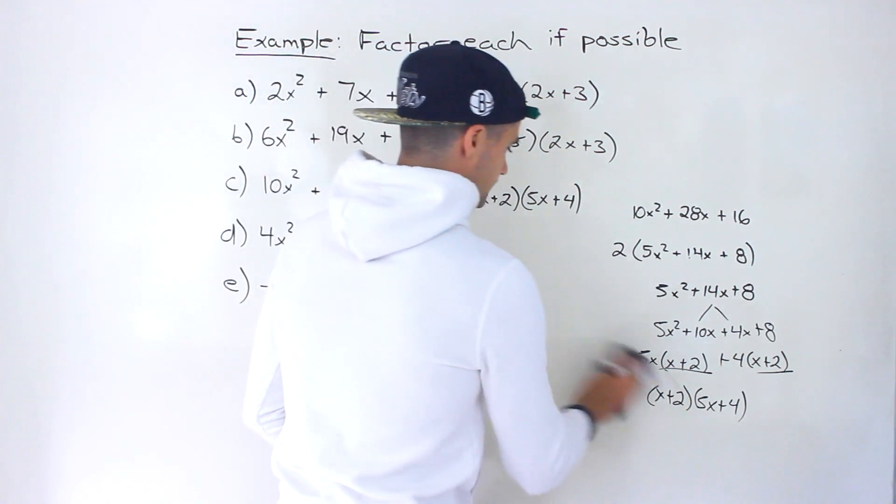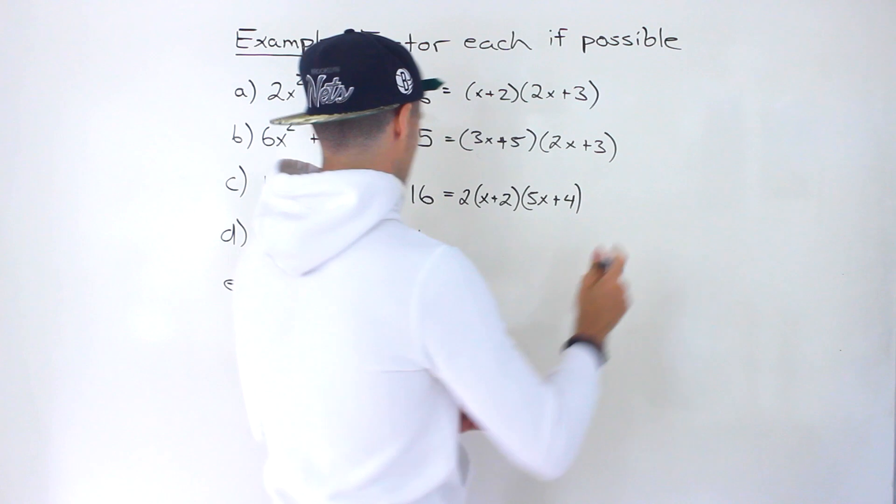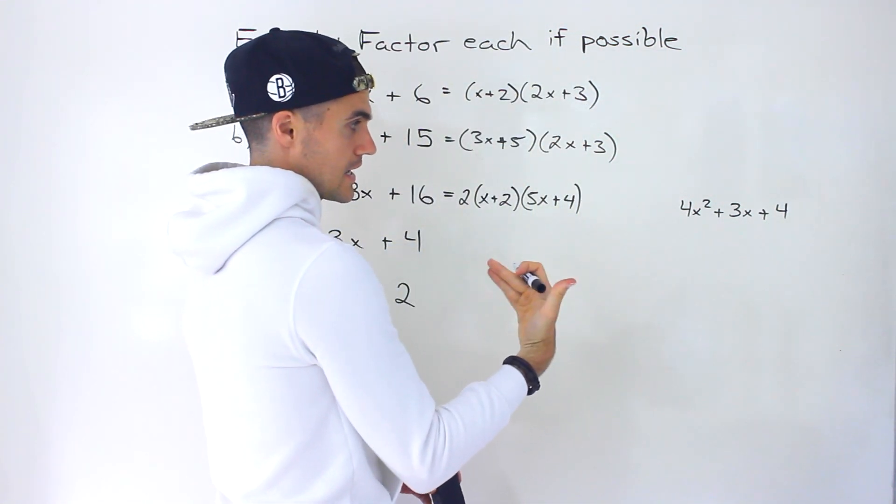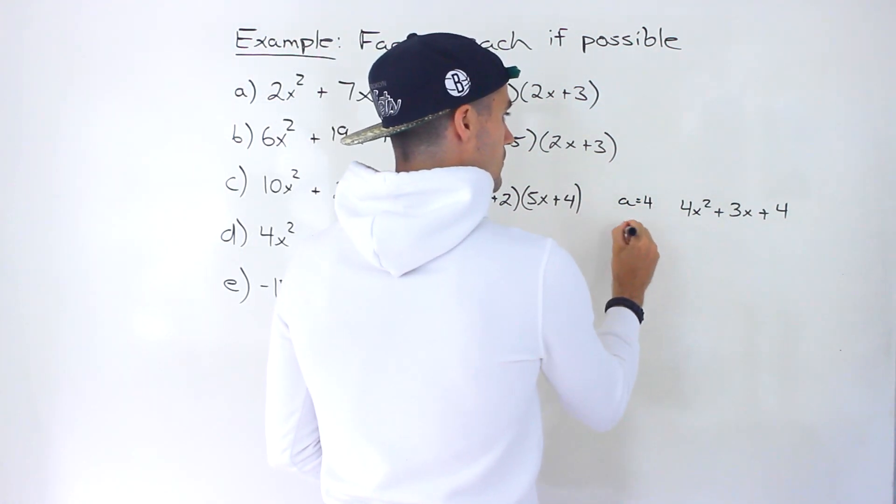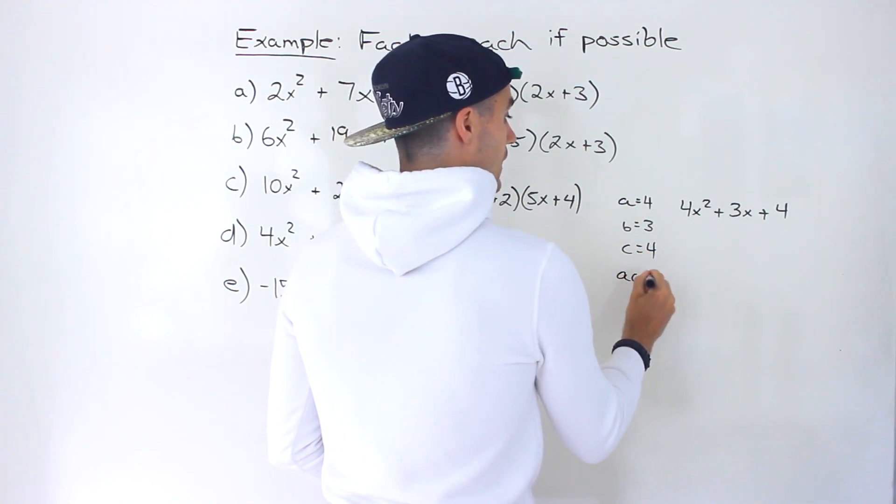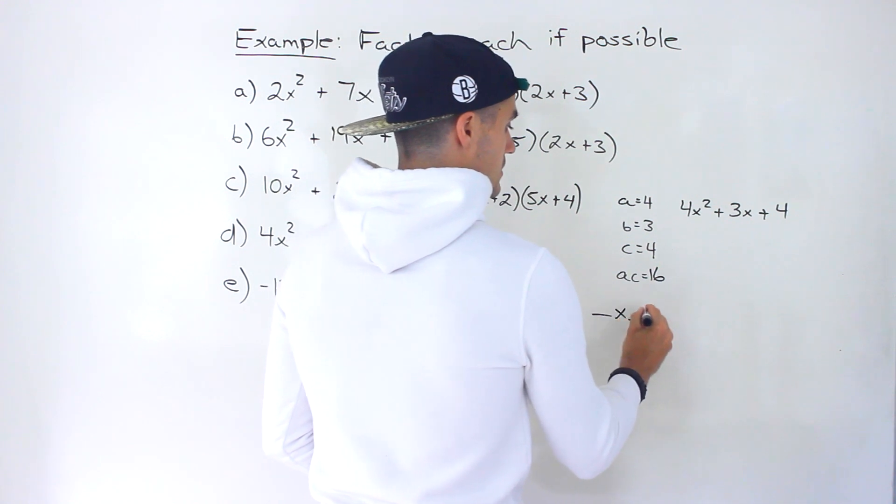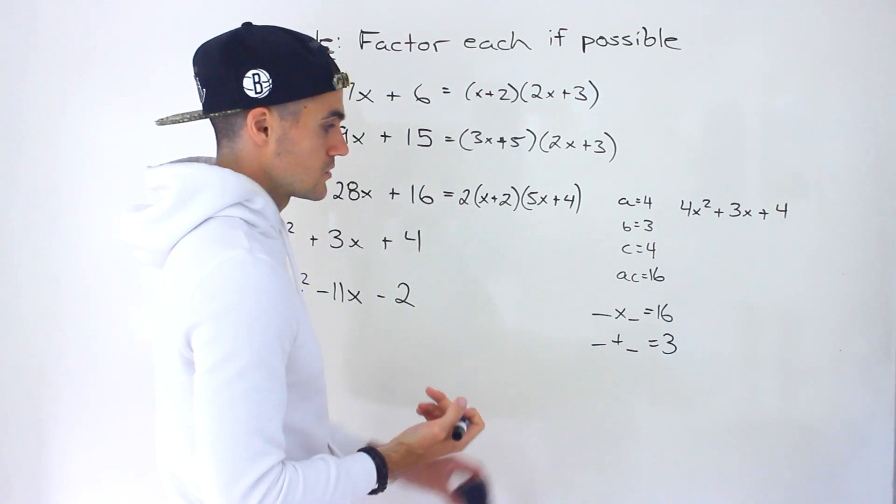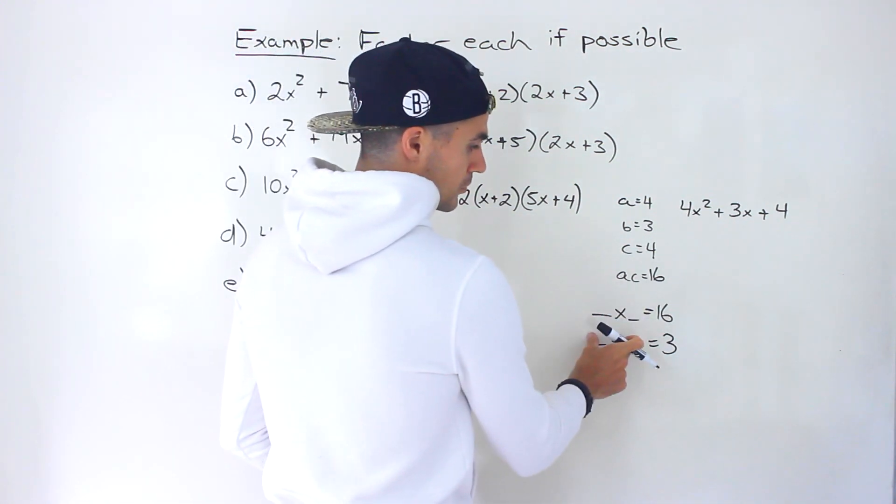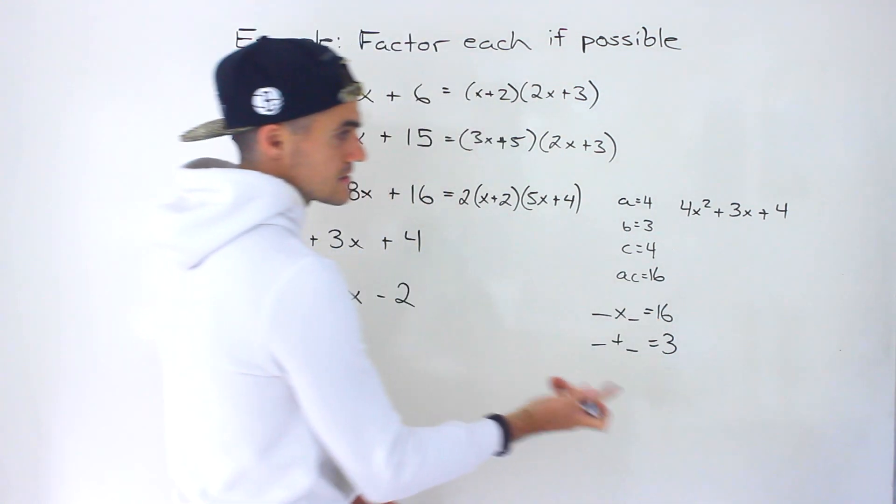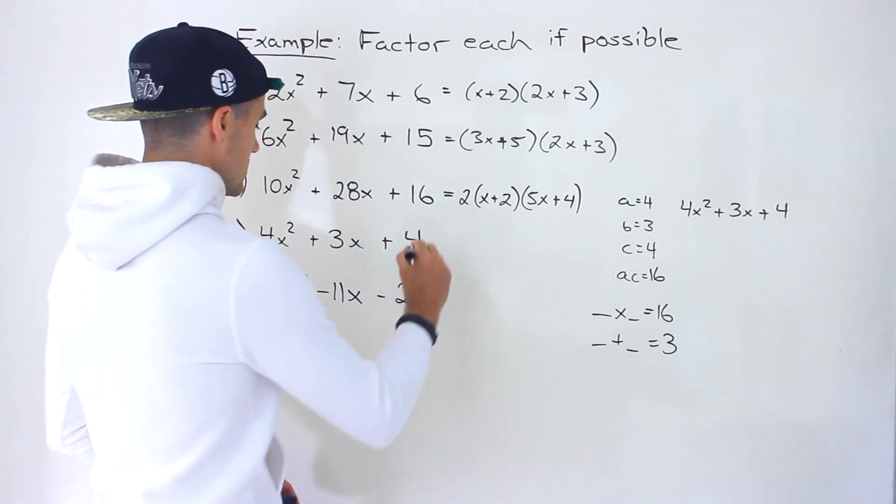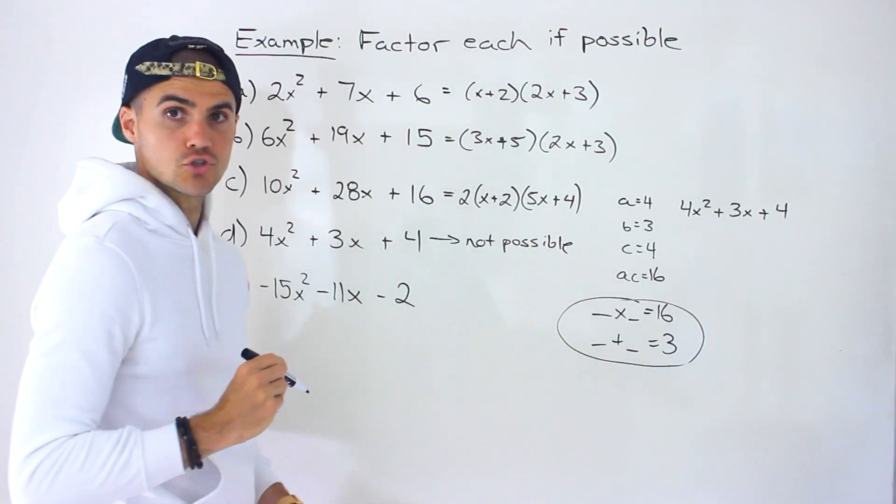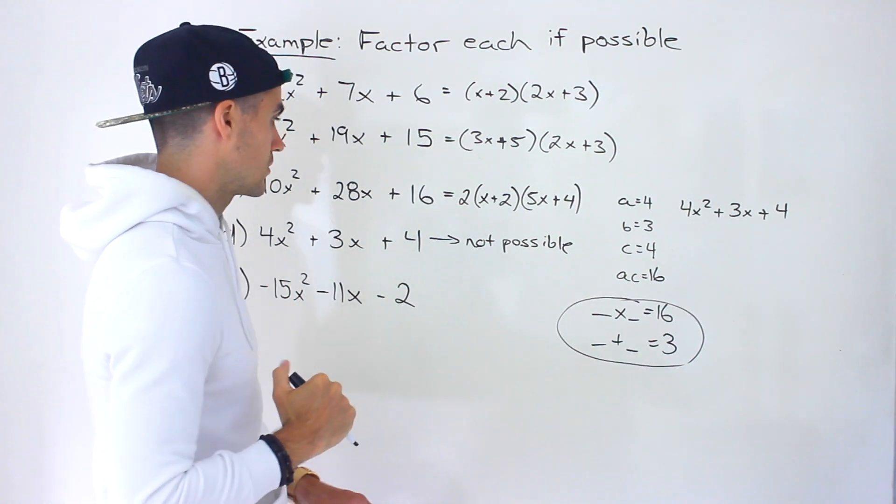Moving on to part D. We would have 4x² + 3x + 4. First thing we check, can we take anything out? In this case, we can't. A value is 4, B value is 3, C value is 4. So what would the AC value be? 4 times 4, which is 16. Find two numbers that multiply to 16 and add up to 3. In this particular case, there's actually not going to be any two numbers that satisfy both of these conditions. 4 times 4, but 4 plus 4 is 8. 8 times 2, but 8 plus 2 is 10, not 3. So there's no numbers here. This here, part D, is actually not possible to factor. If something's not possible to factor, this is the step at which you'll know. If you can't find two numbers like that, then it's not possible to factor with decomposition.